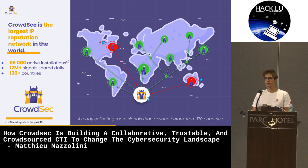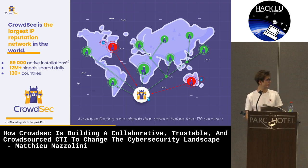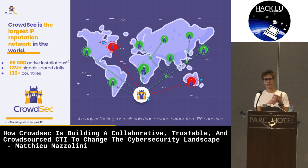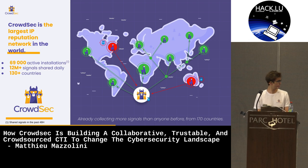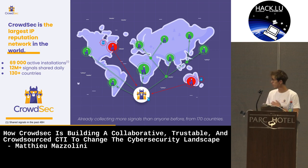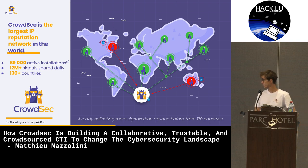So if you remember the four boxes I mentioned at the beginning, CrowdSec takes three of them: it's a reliable system, up-to-date, and automated. But is it comprehensive? Yes, because it runs at scale — it's the largest IP reputation network. We have 69,000 active installations sharing 12 million signals daily from more than 130 countries over the internet.